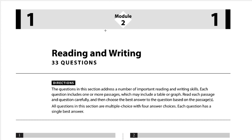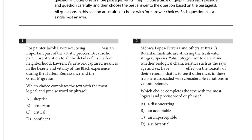This is module two of test one of the four paper practice tests for the new Digital SAT. We'll start with number one: for painter Jacob Lawrence, being blank was an important part of the artistic process. We don't have enough to answer it yet, so we'll read as far as we need to.